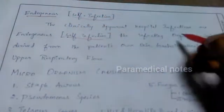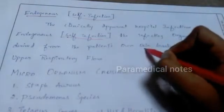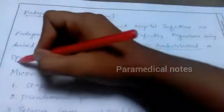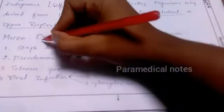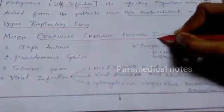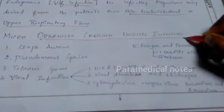The second type is endogenous infection, which is self-infection. If we are working in a hospital and doing any work there, we can get infection from ourselves. Also, from patient to patient we can get infection. That is called endogenous infection.